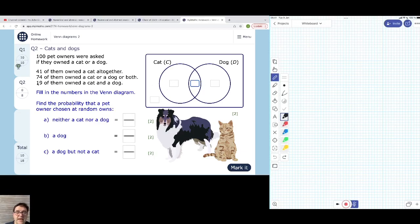19 of them owned a cat and a dog. Well, we can put that directly in the middle. 19 owned a cat and a dog. Now we can go back to the 41 people that owned a cat. So 41 people owned a cat. So there's 41 people inside the whole of the cat circle.